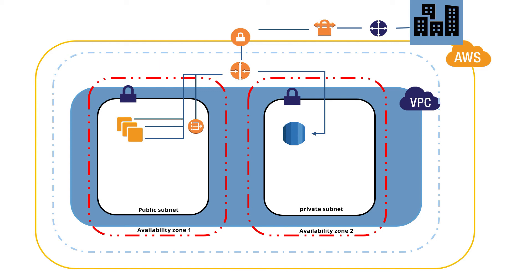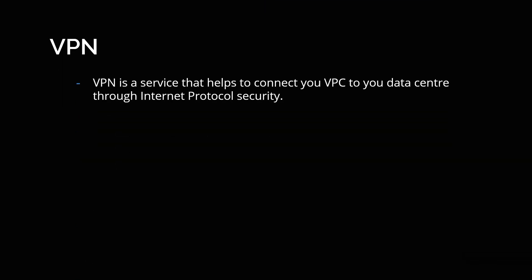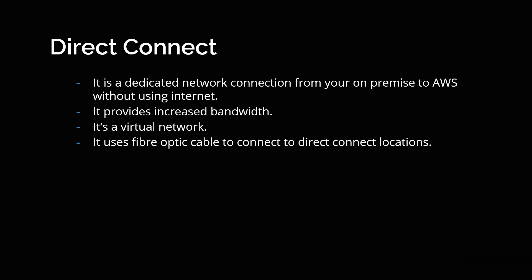There is also another way, which is called Direct Connect. VPN is a service that helps connect your VPC to your data center through internet protocol security. Direct Connect, on the other hand, is a dedicated network connection from your on-premise environment to AWS without using any internet — it's like a private network. You use Direct Connect when there is a requirement for higher bandwidth, where a dedicated fiber optic cable is used to connect to your Direct Connect location. Otherwise, if there is no such requirement, you can go with a normal VPN connection.